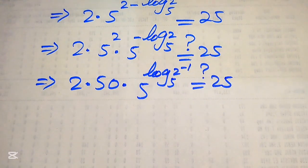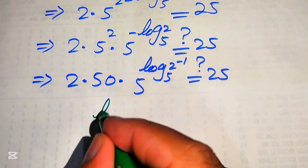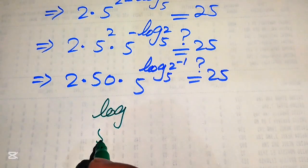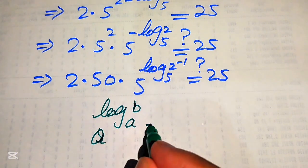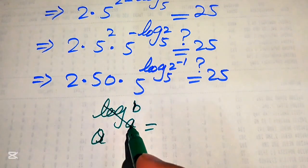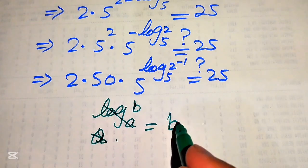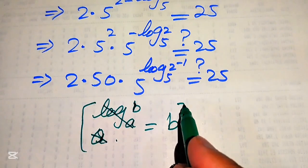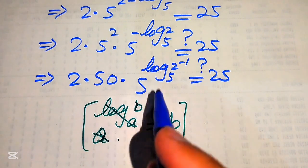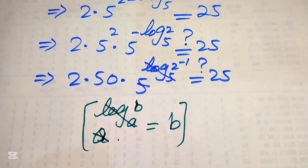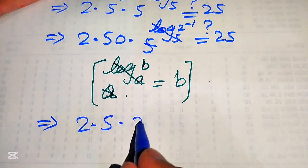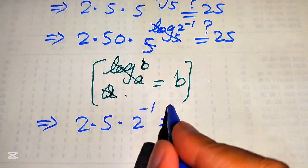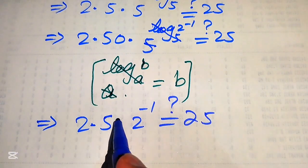We use another property of log: if you have a to the power of log of b with base a, and these two bases are the same, then this log a with this a is cancelled out and we get only b. According to this property, log 5 with base 5 is cancelled out, and after cancellation we get 2 times 5 squared into 2 inverse, and we check that this equals 25 or not.